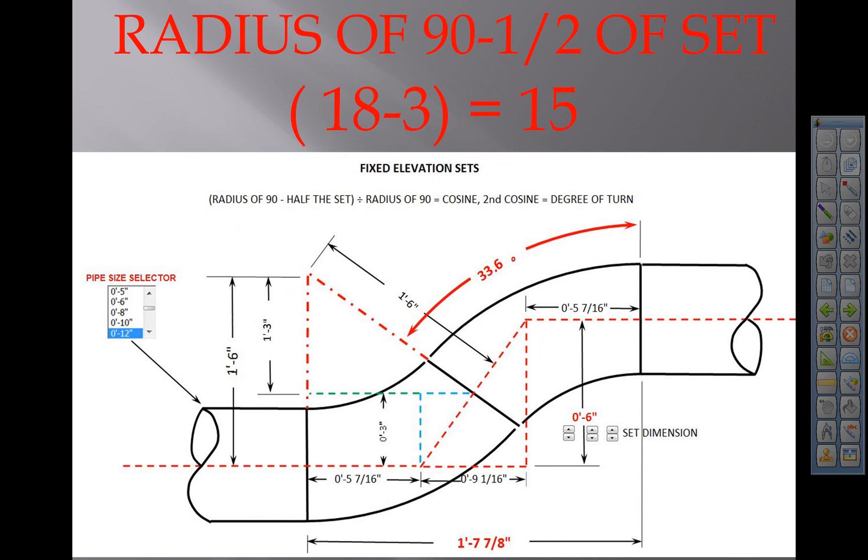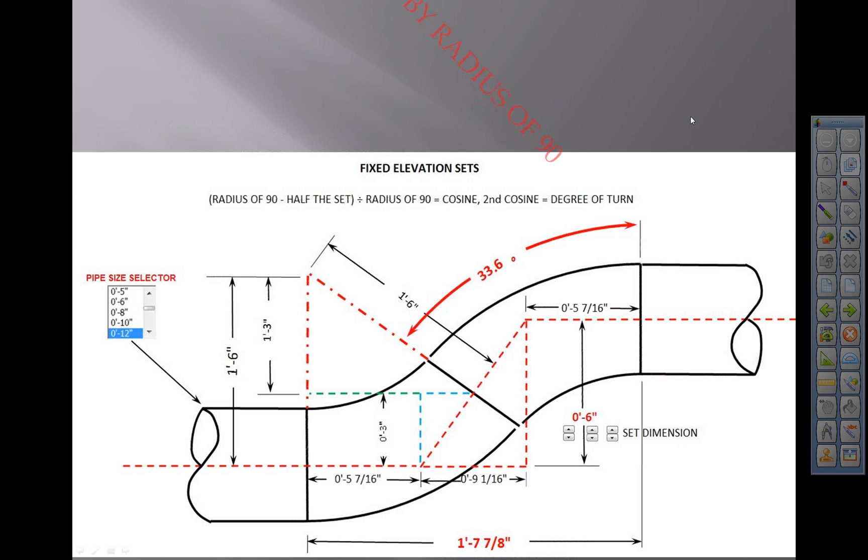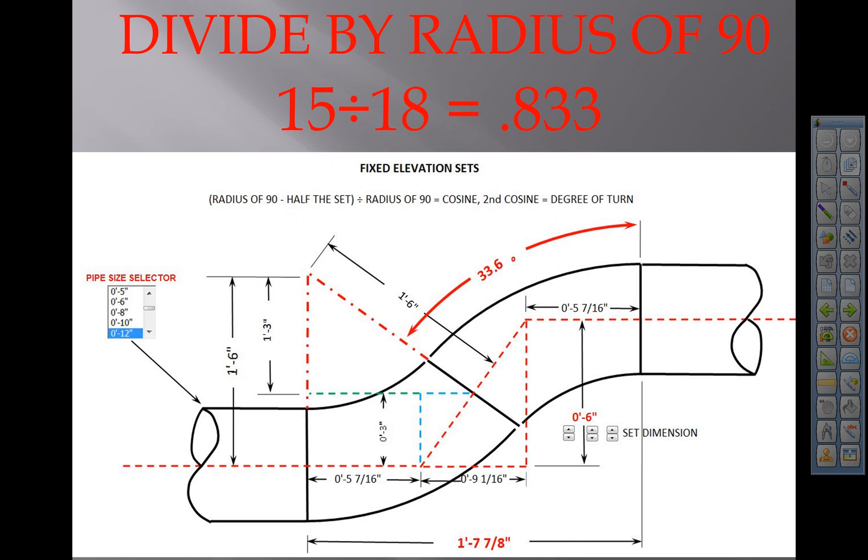Follow along. 18 minus 3 equals 15. First step: 18 being the radius, 3 being half the set. There's your 3. Now divide by the radius of the 90. 15 divided by 18 equals your cosine factor.